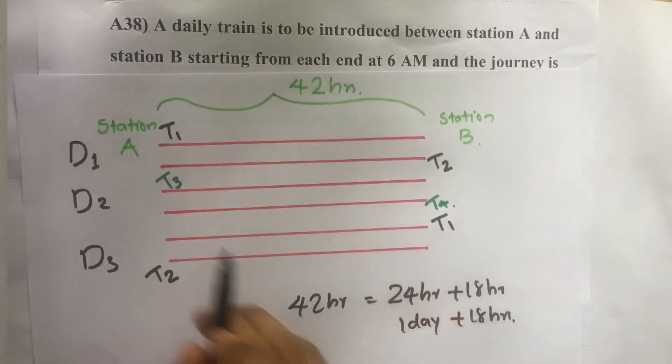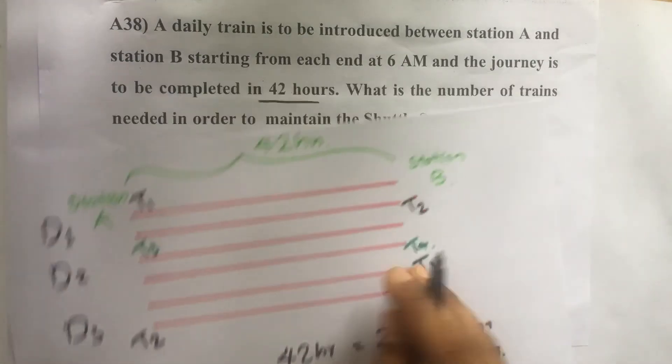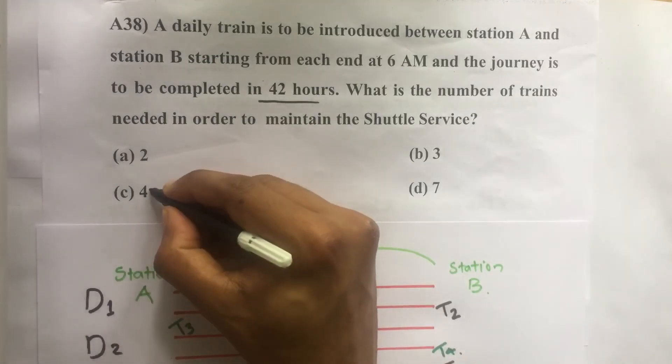So total number of trains required equals T1, T2, T3, T4. Total 4 trains are required. Our answer is option C, 4.